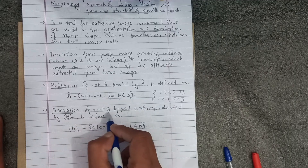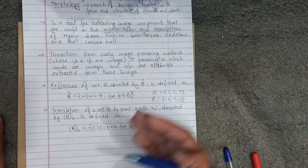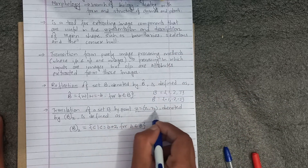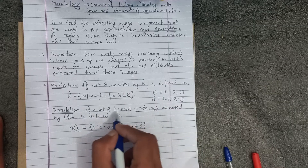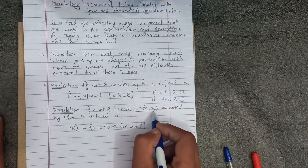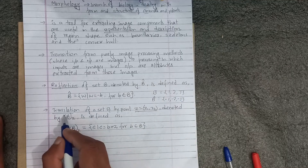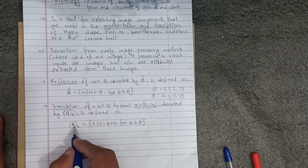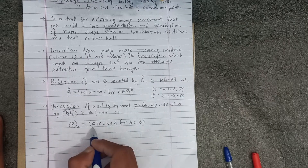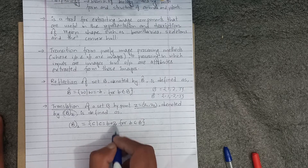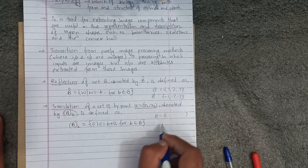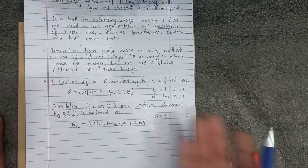Next is translation. Translation of a set B by point z means to move B by point z, where z equals (z1, z2). We denote this as B translated by z, which is the set of c such that c equals b plus z, for b belonging to B. So the z value translates B.